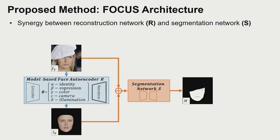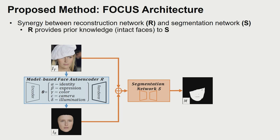In this work, we introduce an approach to handle outliers without requiring any segmentation annotations. In particular, we propose to train a face autoencoder and outlier segmentation network jointly and create synergy between them.